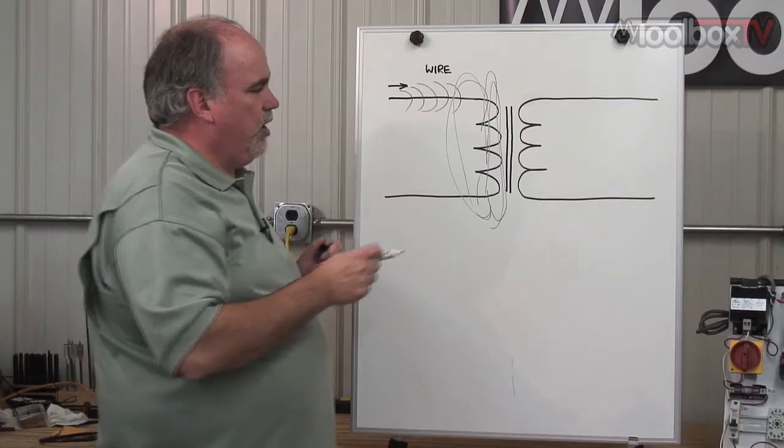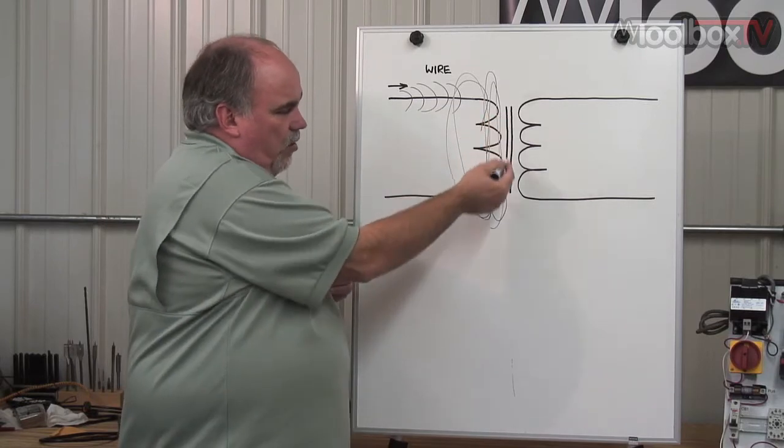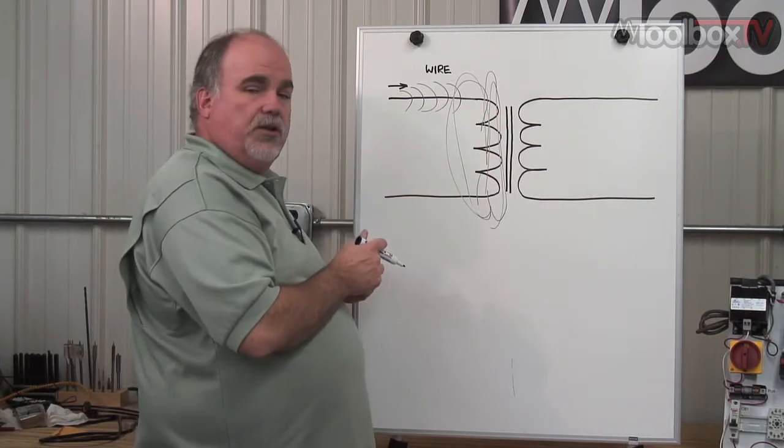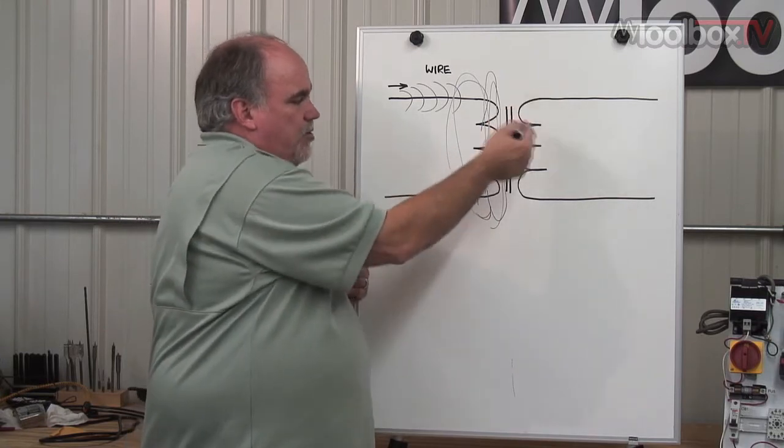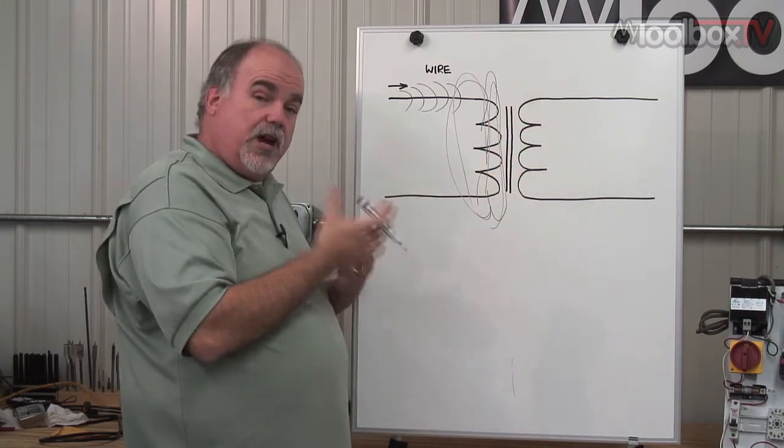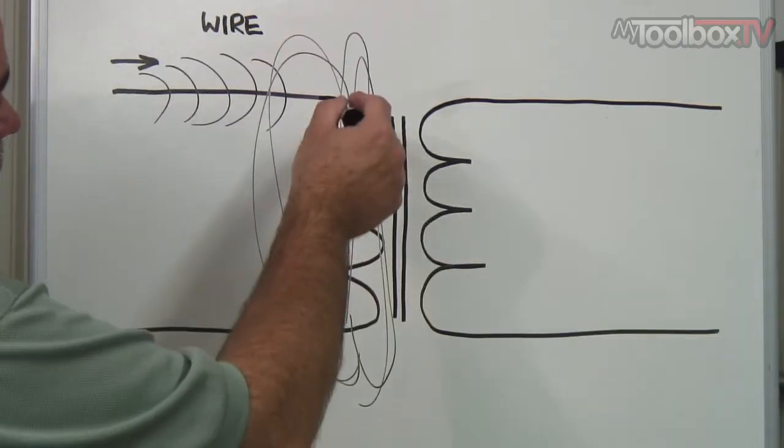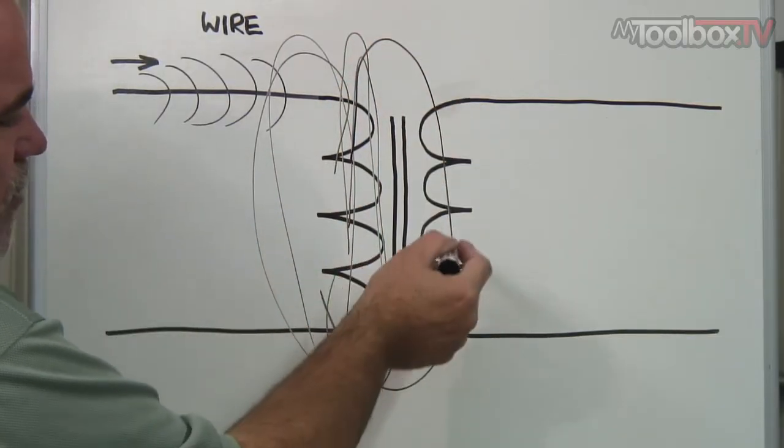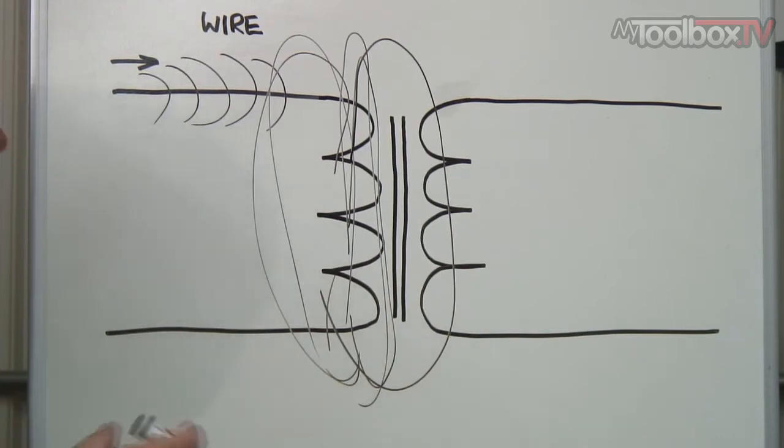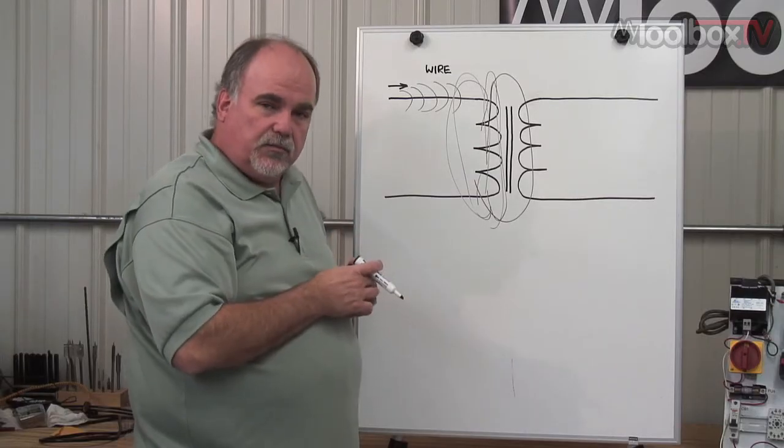Now if you put an iron core in that coil, which is what this represents, and put another coil next to it that are actually sharing the same iron core, the magnetic field created by this iron core will be passed to this one. Because if there is a magnetic field present, and you pass a conductor through that magnetic field, or vice versa, current can be induced into the second conductor.